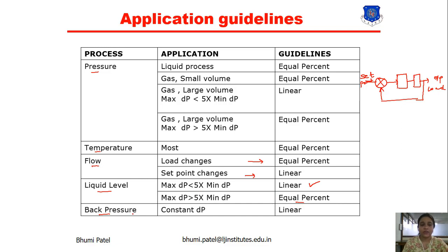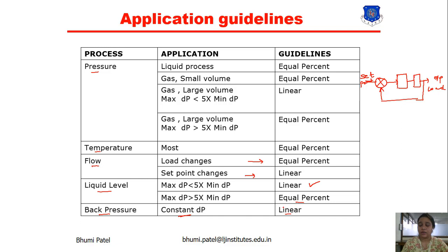For the back pressure process, when back pressure is generated in the process, we use constant differential pressure, and for that we compulsorily use linear characteristics. According to the application or output, we can decide the valve characteristic using this chart.